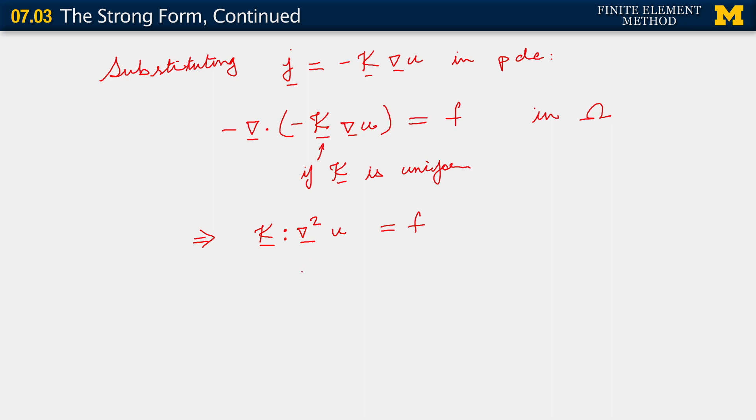Now, it's useful to write this in coordinate notation to see exactly what is meant here. The double dot there, which I refer to as the contraction, essentially is an extension to tensors of the idea of a dot product. And what this thing is doing for us is it is doing kappa_ij multiplying u_i comma j. In this context, what we have here, that is the Hessian operator.